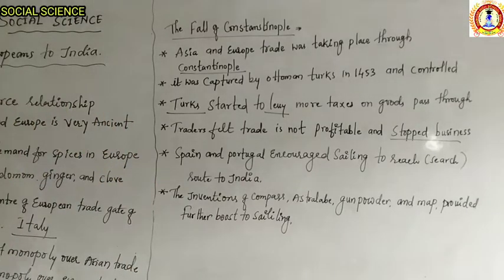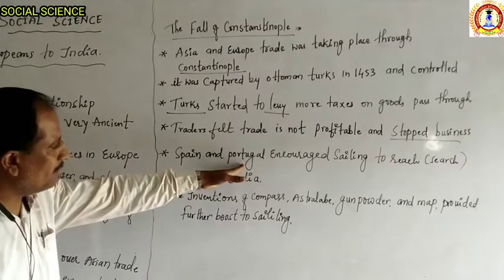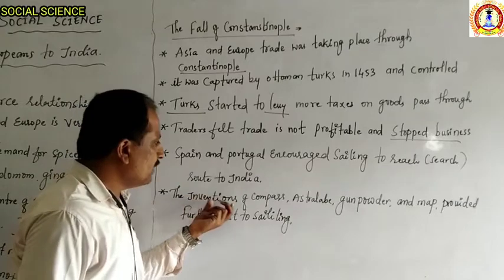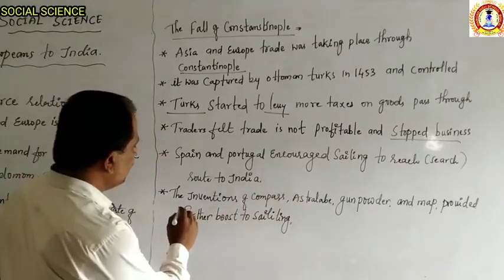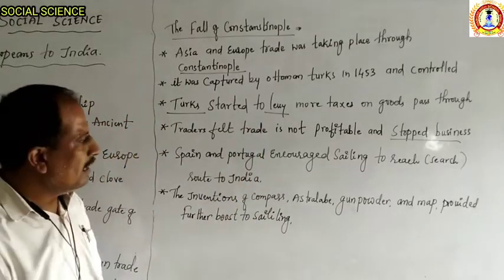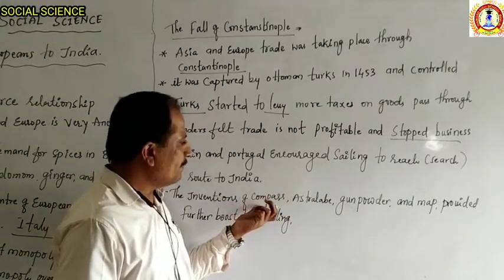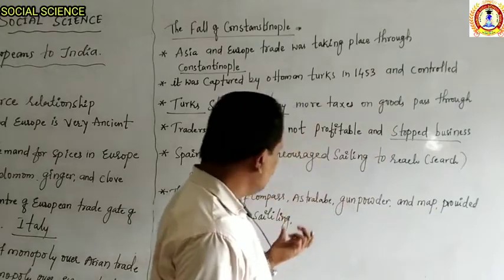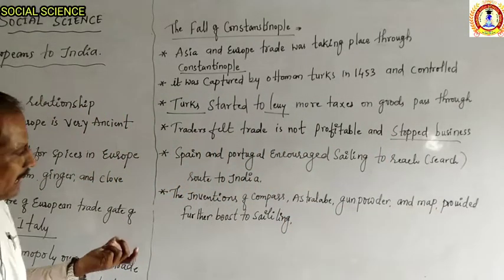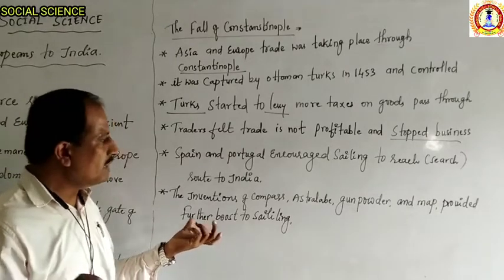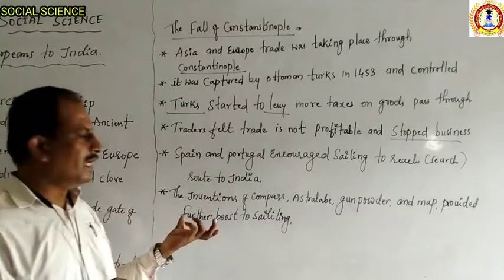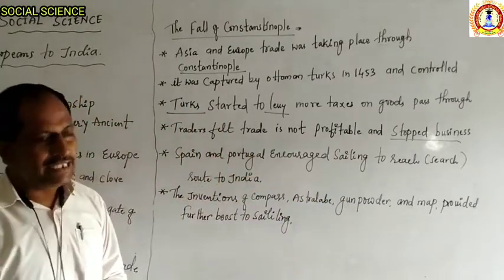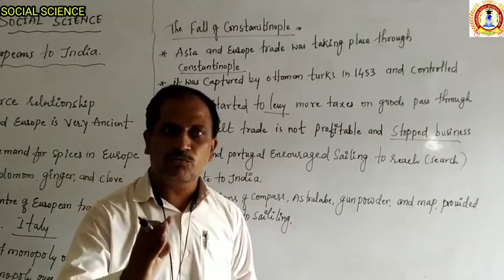At that time the Italians, Spanish, and Portuguese started to search for a sea route to India. They invented many types of instruments to supply to sailors — the astrolabe, gunpowder, and maps — to help find another route to India. These new inventions were made by Europeans and sailors from Spain and Portugal, and they started searching for new routes towards India.